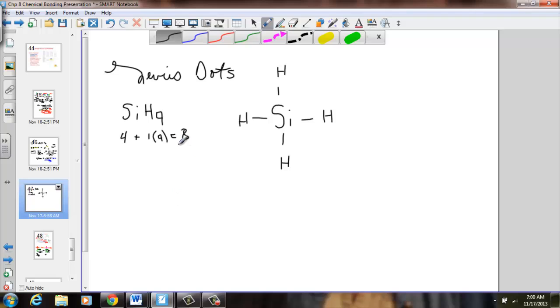Simple enough. All the dots are gone. Hydrogen has the octet it needs of 2, and silicon has the octet it needs of 8.